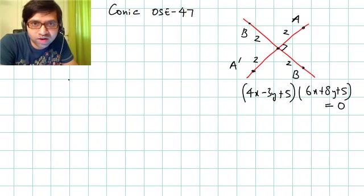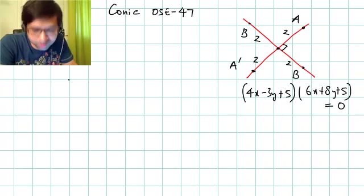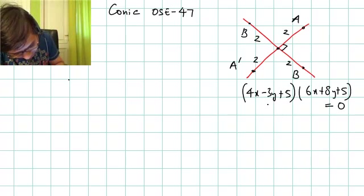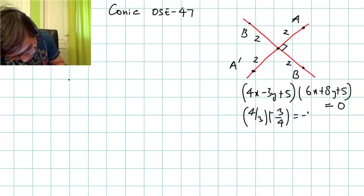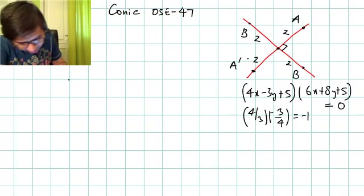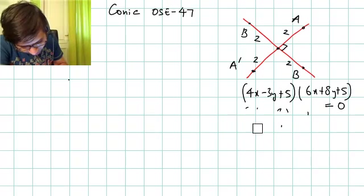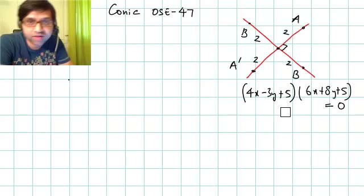This question makes sense only when the pair of lines are orthogonal, and you can verify this. The slope of the first line is 4/3 and the slope of the second line is -3/4. Their product is -1, confirming these lines are perpendicular.